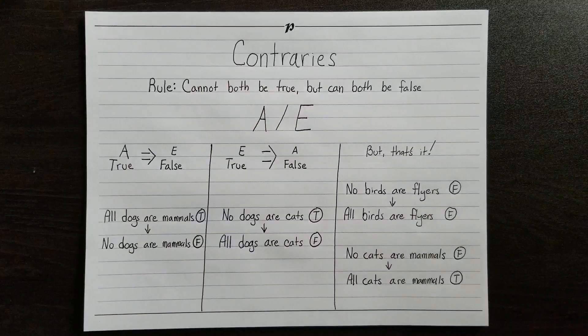When it comes to contraries, you'll only be capable of making inferences given a true A- or E-type statement.